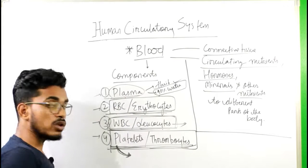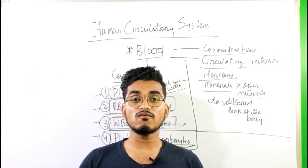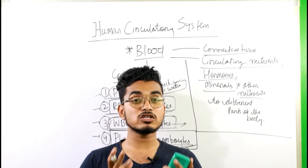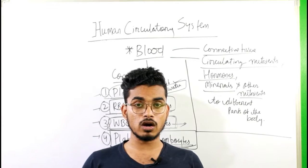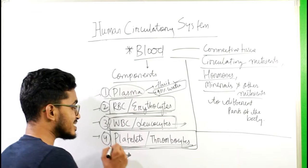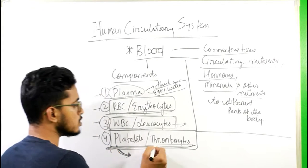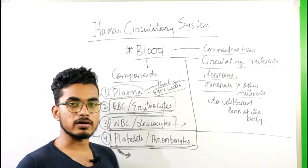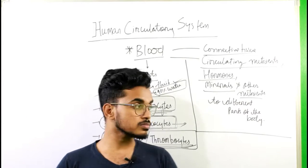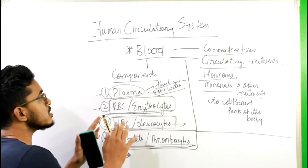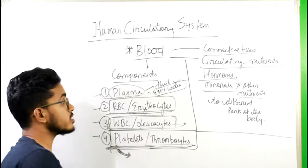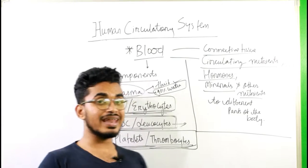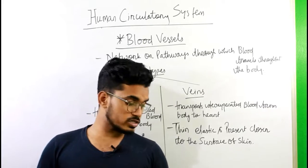When we have a wound, the blood will not continuously flow out of our body — at some point, the blood will stop flowing out. Platelets are the components of blood which help in clotting the blood at the wound. These are the components of blood and the role of each component. Now let us move to the next part.